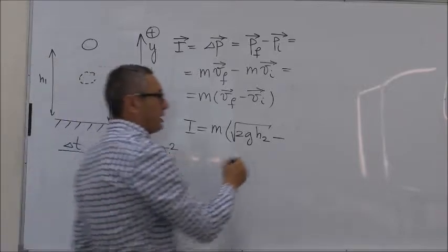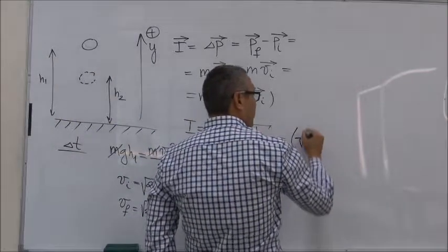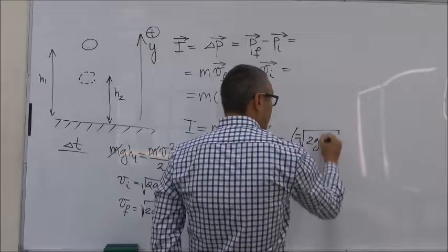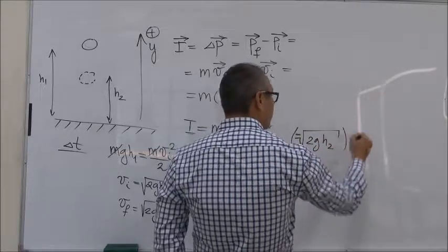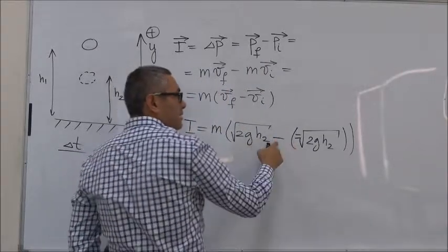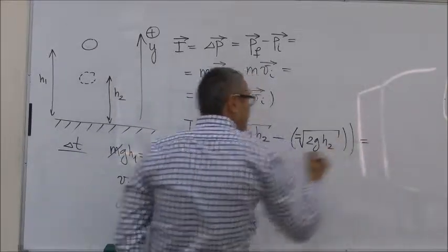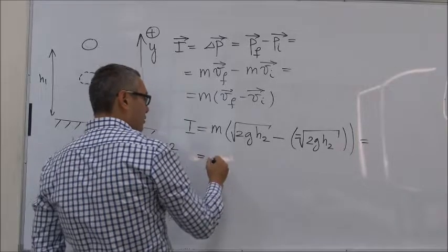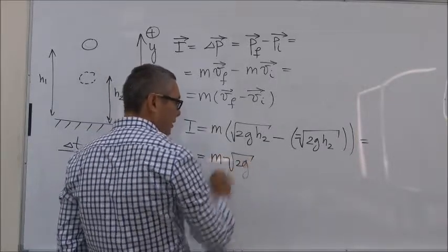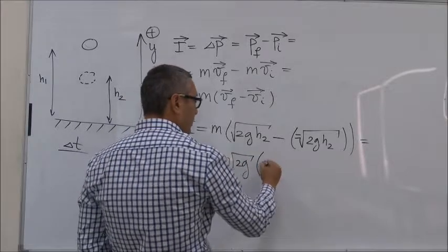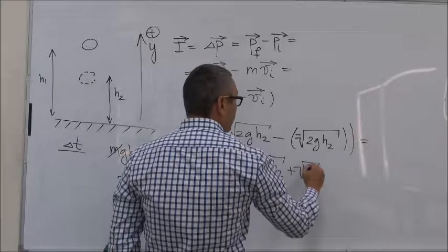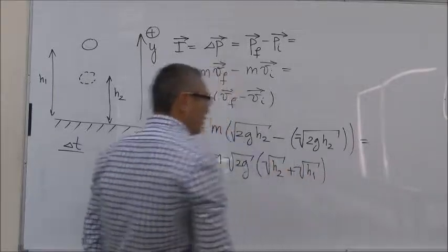So we have to say minus of minus square root of 2GH1, so 2 minuses. Now minus cancels minus and you get plus. So this becomes M square root 2G can be taken out, and then here you have H2 plus H1.